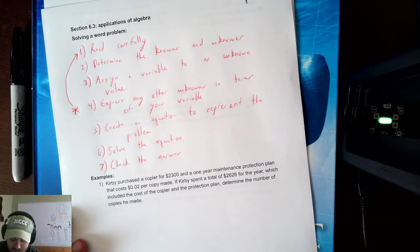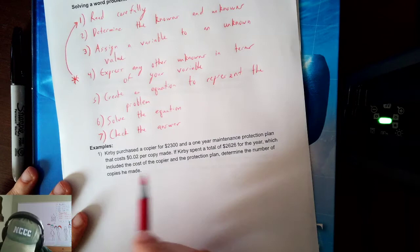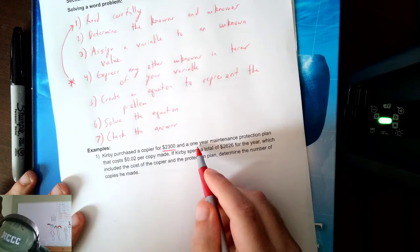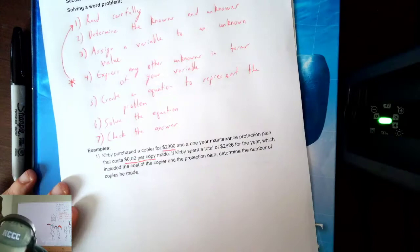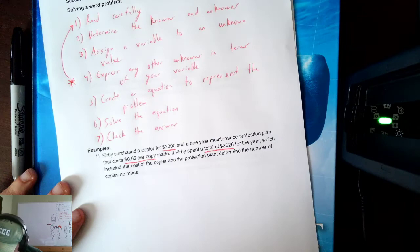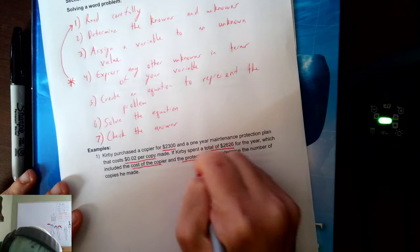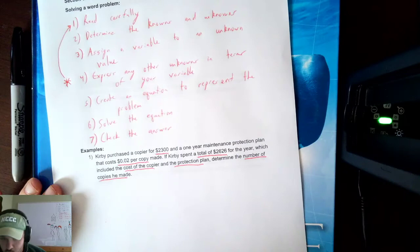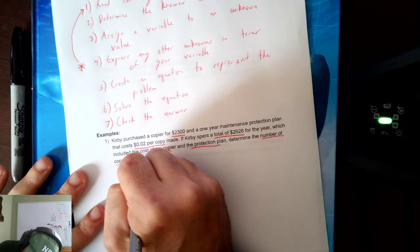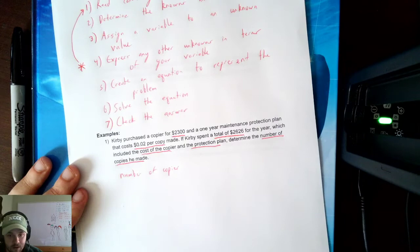Let's take a look at our first example. Let's read the whole thing together and I'll underline as we go. Kirby purchased a copier for $2,300 and a one-year maintenance protection plan that costs two cents per copy. If Kirby spent a total of $2,626 for the year, which included the cost of the copier and the plan, determine the number of copies he made. Right away I see an unknown: the number of copies.